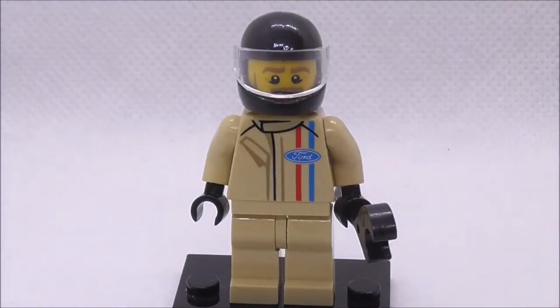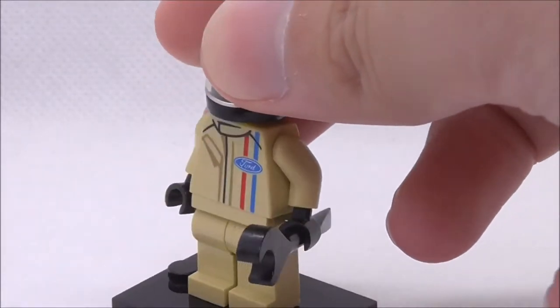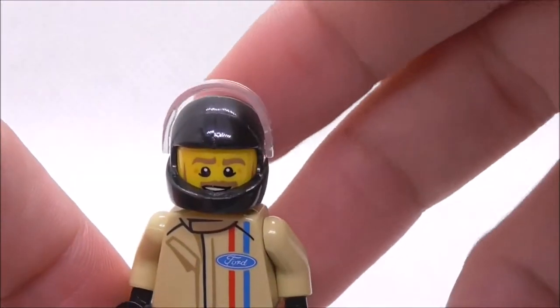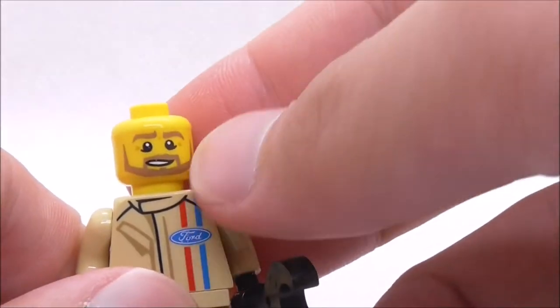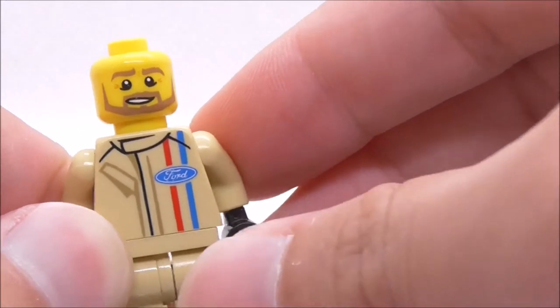So this is the minifigure itself right here, which is the driver. So he does come with a wrench. He does have his racing helmet with this visor which you can lift up. But under there you can see his face, this smiling face with the beard and stuff.